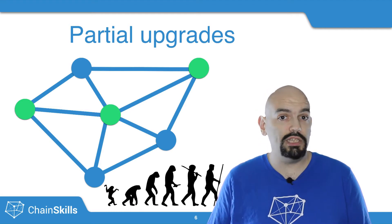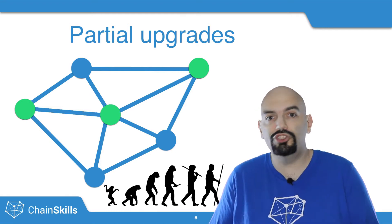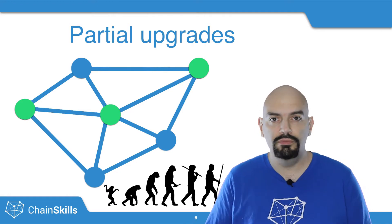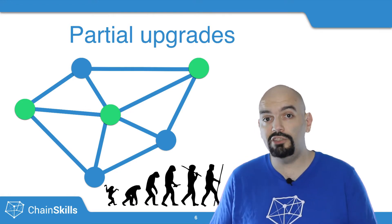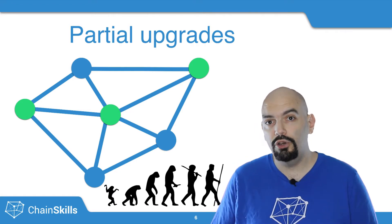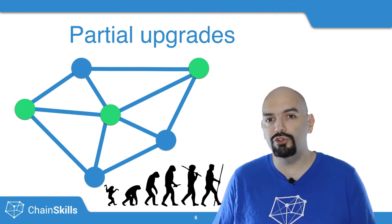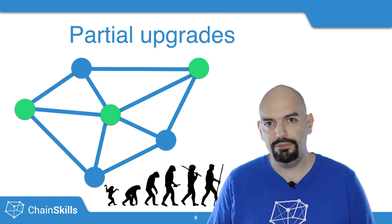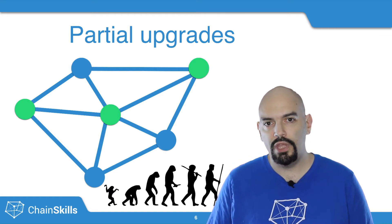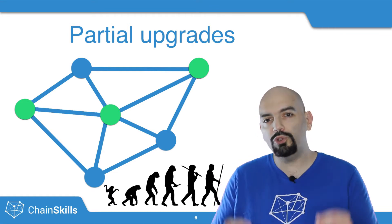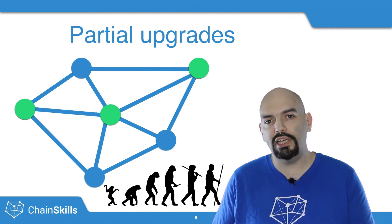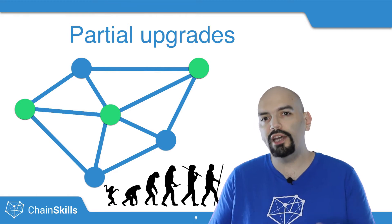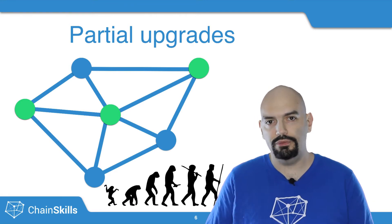In a centralized system, it's pretty easy to do — you just upgrade a few servers and you're done. But in a decentralized network, where you have no way to control older nodes, it's a whole different story. Now, in the blockchain world, there are two kinds of forks: soft forks and hard forks.